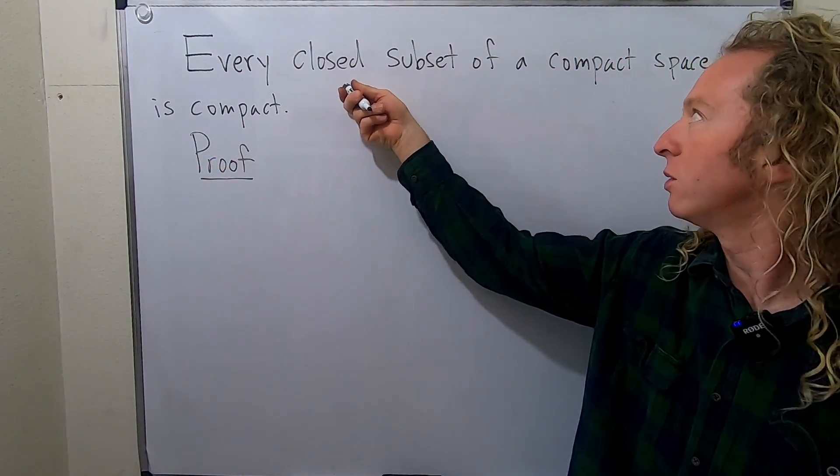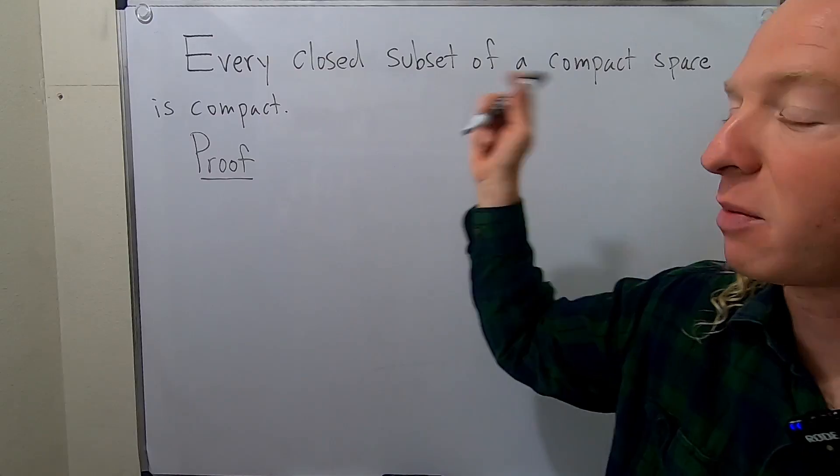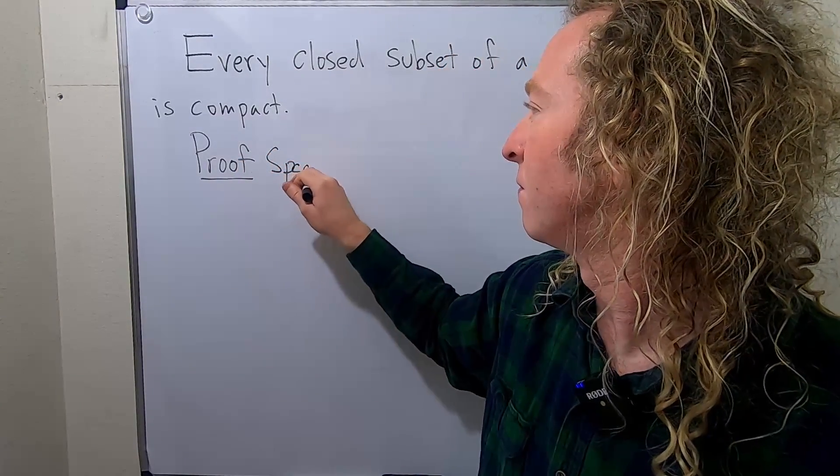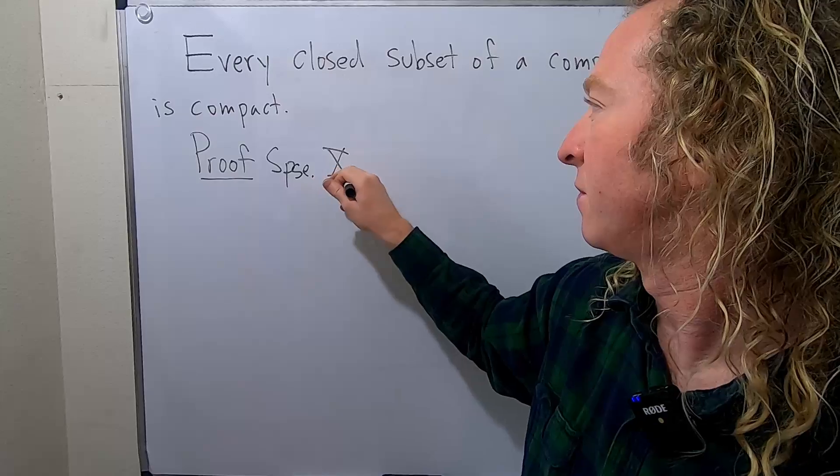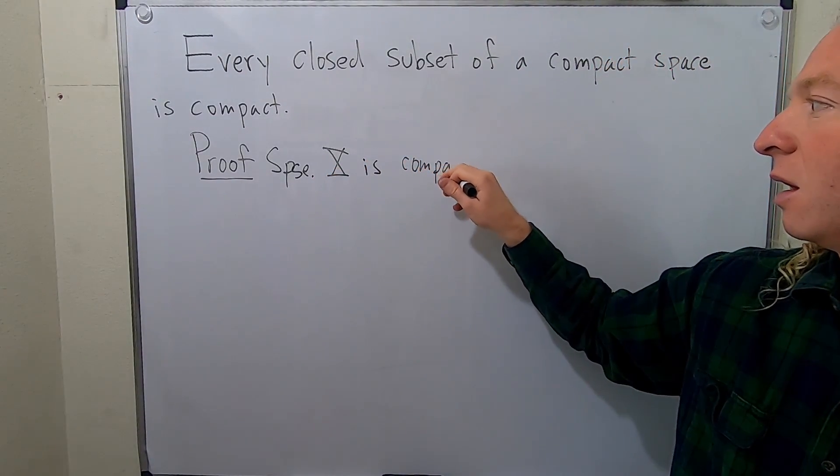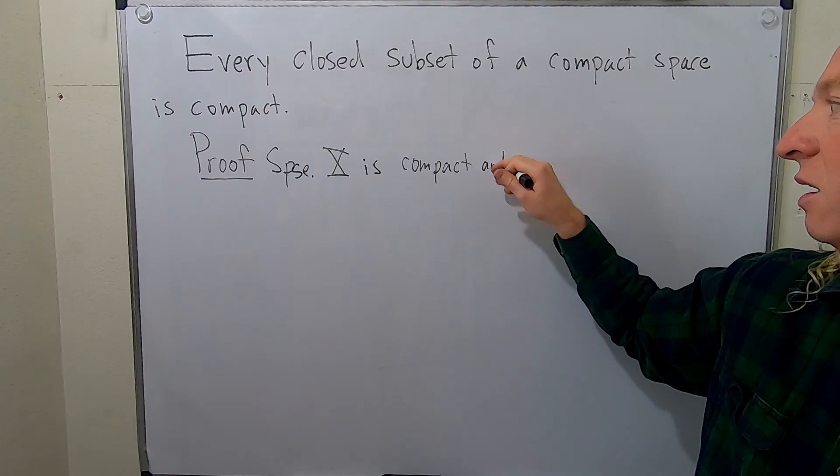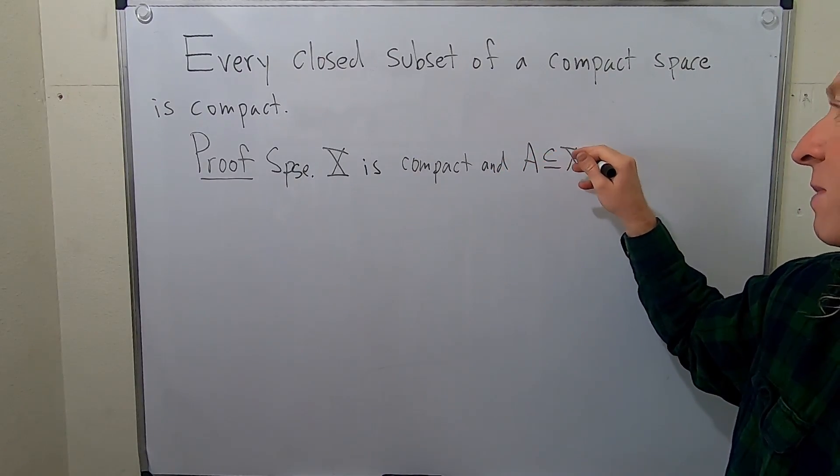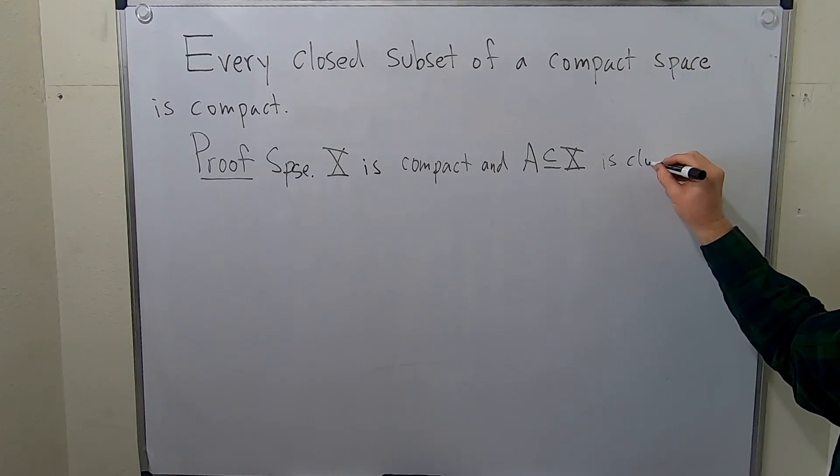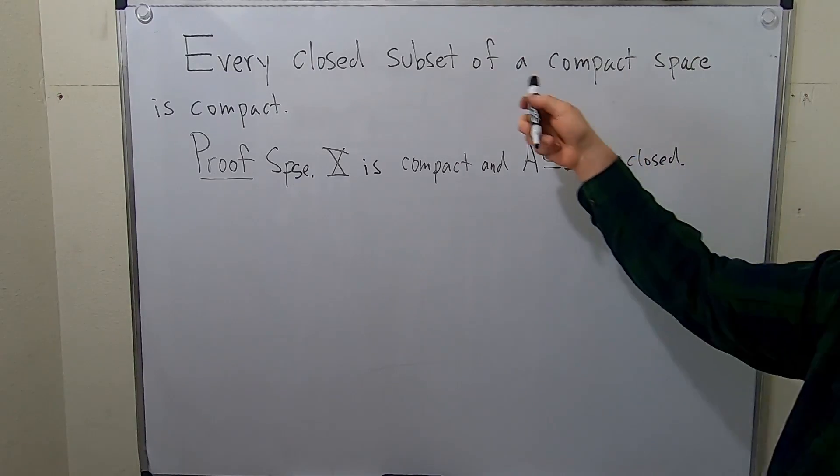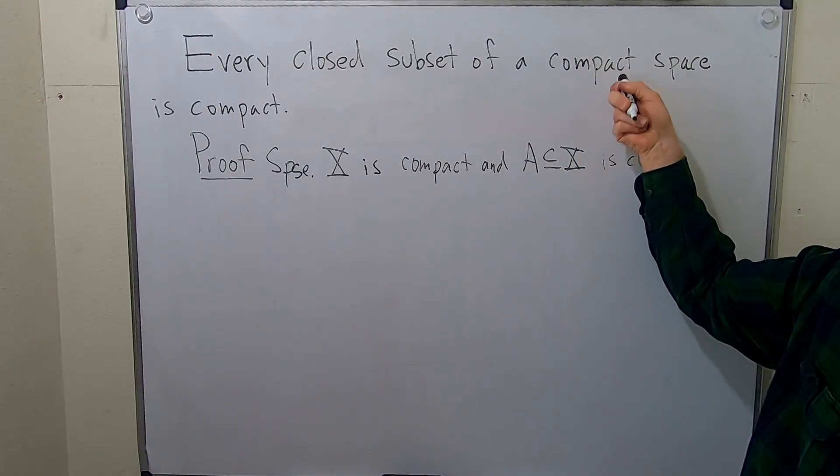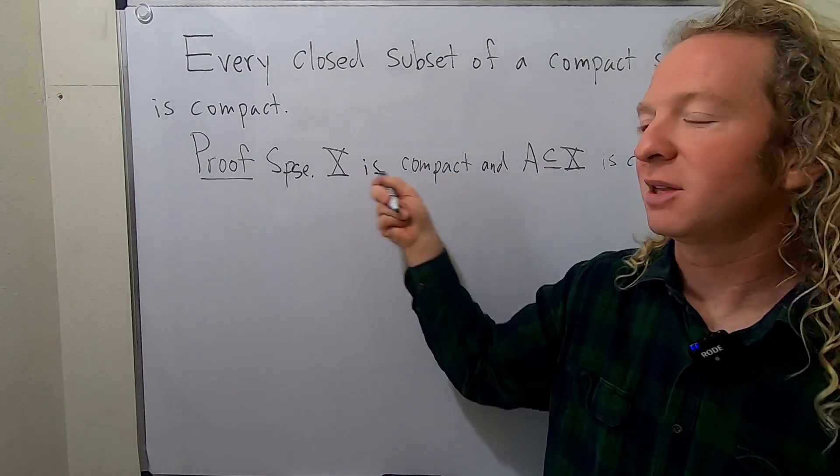So we'll start by assuming we have a closed subset of a compact topological space. So suppose that X is compact and A, which is a subset of our compact space, is closed. That's our assumption, right? Every closed subset, so A is our closed subset of a compact space, that'll be X, that's our compact space.